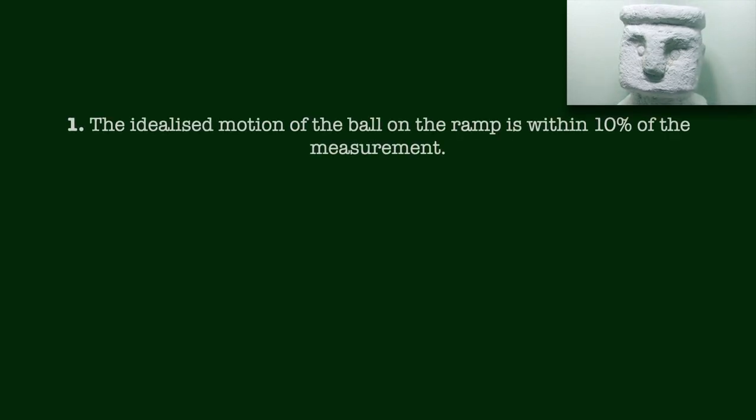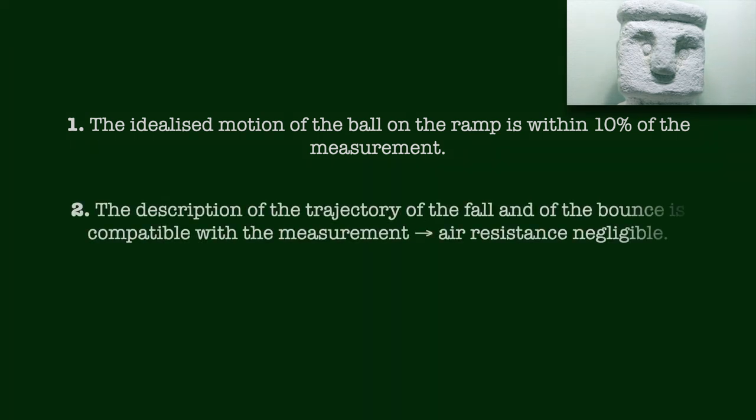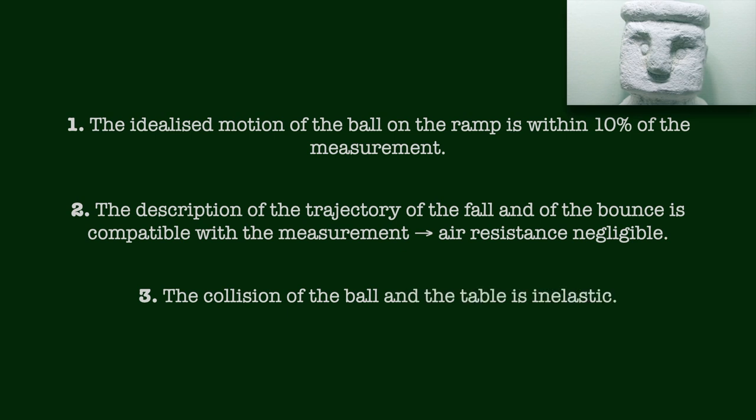OK, let's sum up what we have learned from this example. First, idealizing the motion of the ball on the ramp got us the ball velocity within 10% of the measured value. In order to do better than that, we'd have to start including the second order effects, such as the rolling resistance. Second, the fall from the ramp and the trajectory after the bounce look perfectly described by our equations. So I would dare to conclude that the air resistance can indeed be neglected. Third, the collision of the ball and the table is far from elastic.